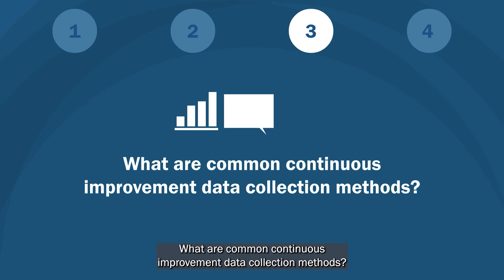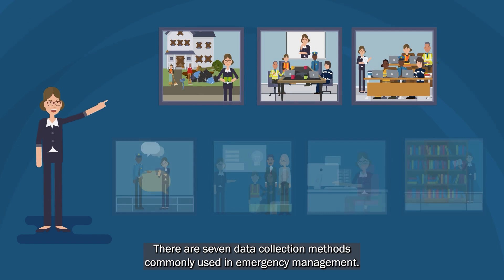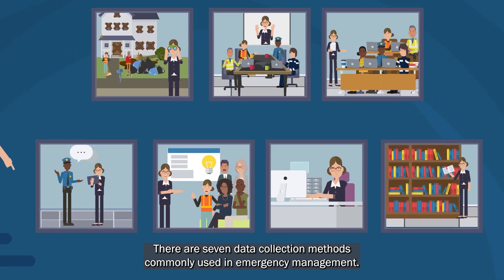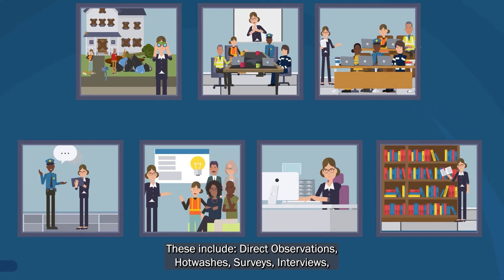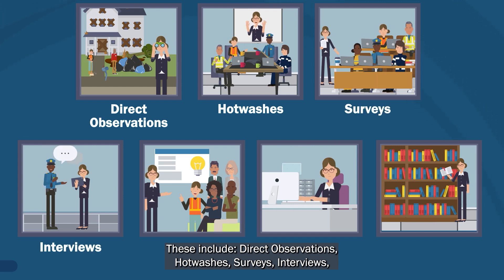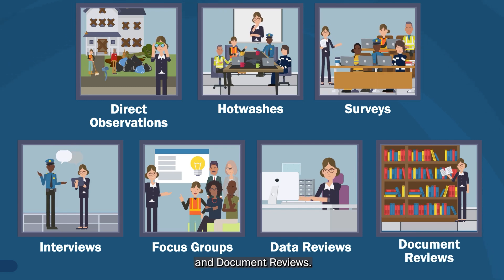What are common continuous improvement data collection methods? There are seven data collection methods commonly used in emergency management. These include direct observations, hot washes, surveys, interviews, focus groups, data reviews, and document reviews.